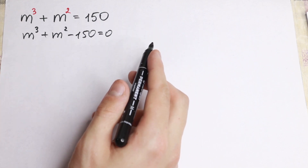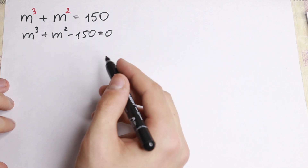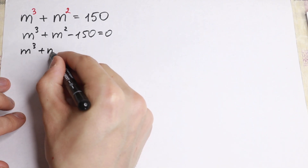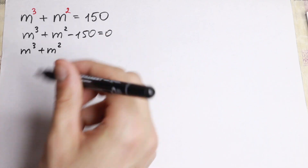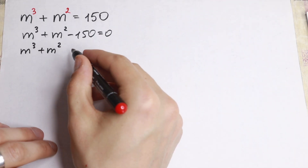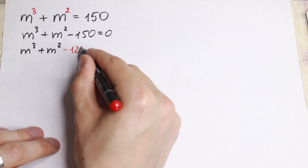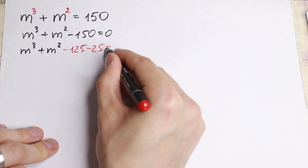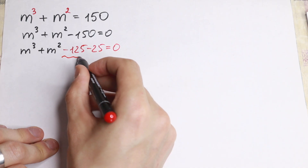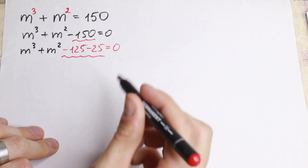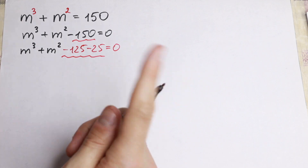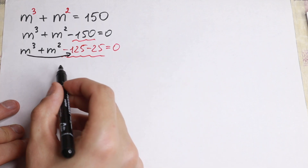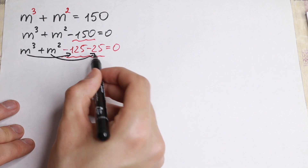Right now I want to show you a really good approach — how can we solve this easily and fast. Right here m³ plus m² minus 150, I want to write it in another way: minus 125 and minus 25 equal to zero. So I just write 150 as 125 plus 25. Because right now I'm going to group the element m³ with 125 and m² with 25.